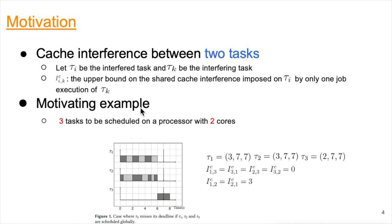This is the motivating example of cache interference and valid task partitioning. We consider three real-time tasks to be scheduled on a processor with two cores. The task parameters are listed here. Tau_1 and tau_2 have the same parameters: execution time equal to 3, relative deadline equal to period 7. For task tau_3, it has a worst-case execution time of 2, and its relative deadline and period are also 7. We assume there is no cache interference between tau_1 and tau_3, and no cache interference between tau_2 and tau_3. However, tau_1 and tau_2 do interfere with each other, and the worst-case cache interference is 3.